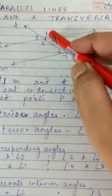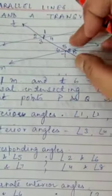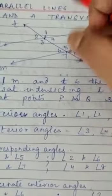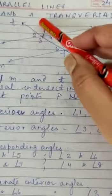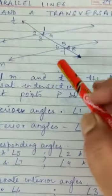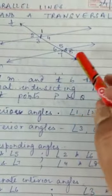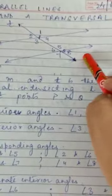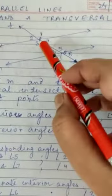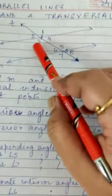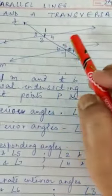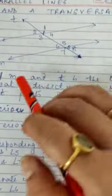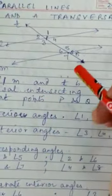The exterior angles of the two parallel lines are 1, 2, 7, and 8. The interior angles are 3, 4, 5, and 6. These are the interior angles.